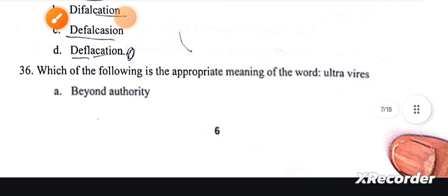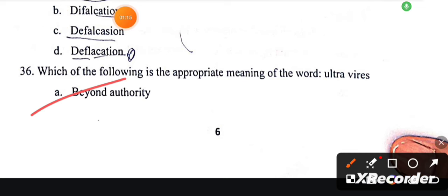Which of the following is the appropriate meaning of the word ultra vires? The correct answer is A, beyond authority.